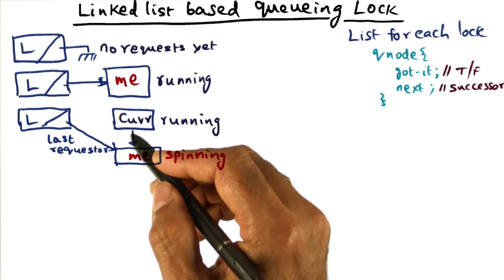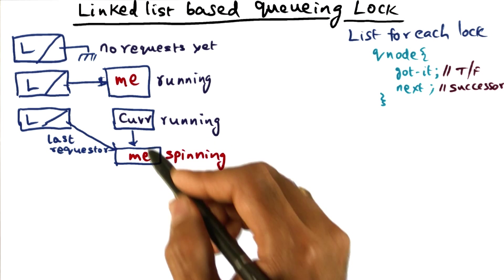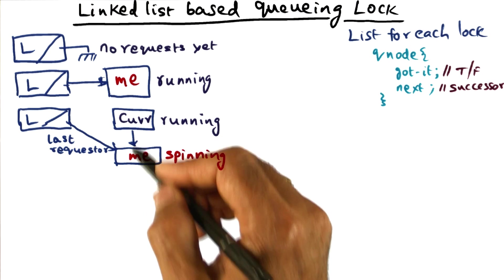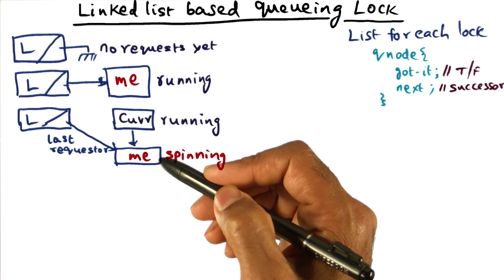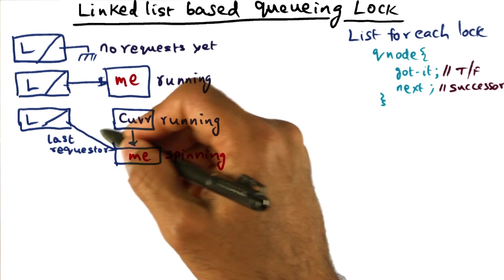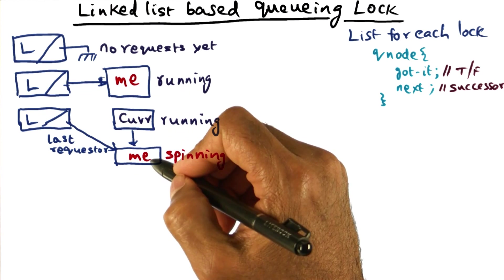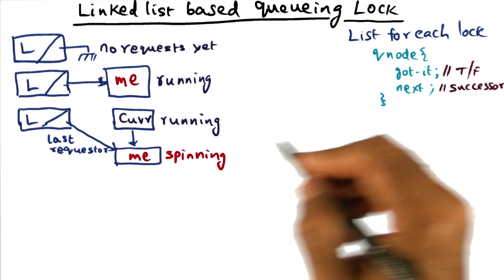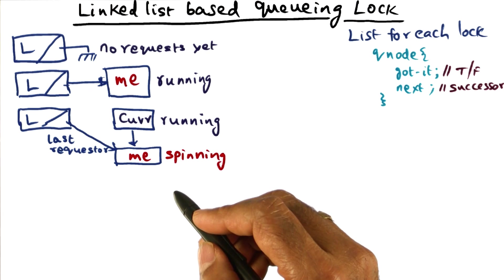And I'll set up the linked list so that the current lock holder points to me through his next field. And my next field of course is nil because there's no requester after me. So once I've fixed up this linked list in this fashion, then I basically can spin on my guarded Boolean variable.